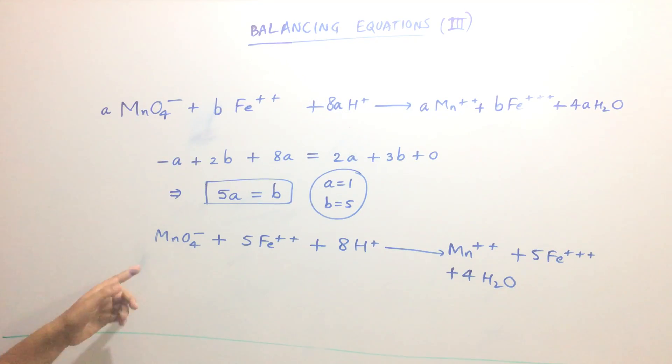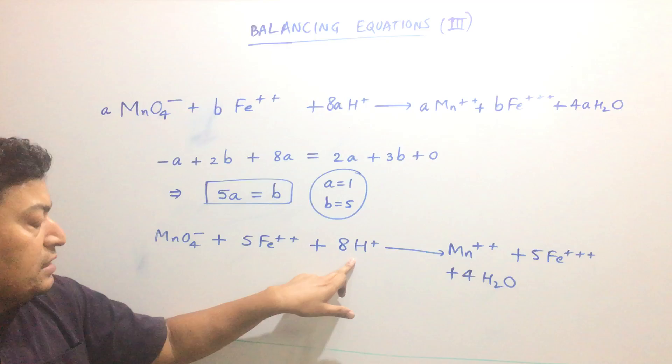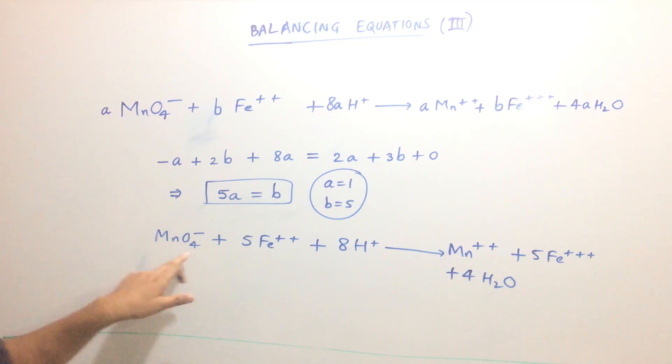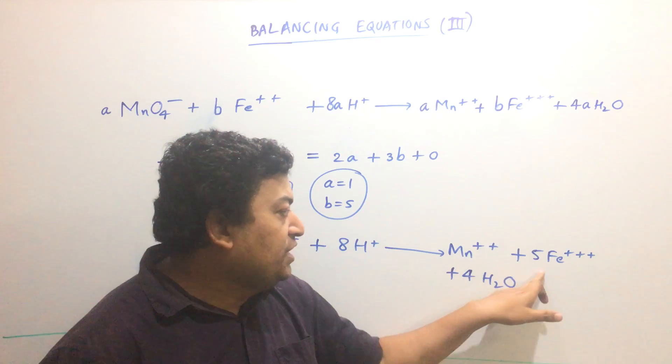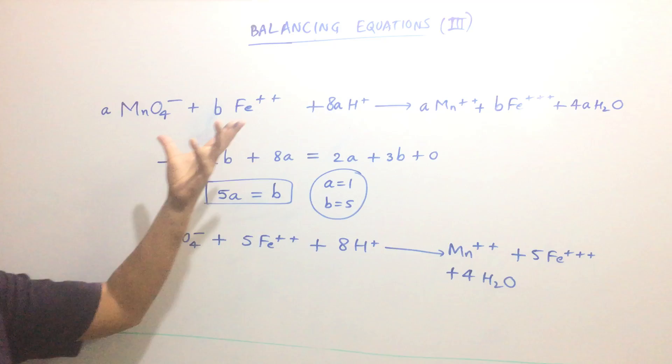Now we count the charge. Minus 1 plus 10 plus 8. So 10 plus 8 is 18, 18 minus 1 is 17 on this side. And this side, 5 times 3 is 15 plus 2 is 17. So you can see our equation is balanced. This method is really easy.